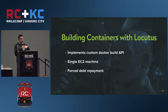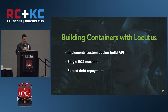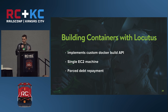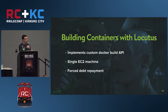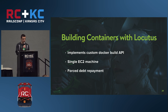Shopify has outgrown Dockerfiles, so we have our own internal build system called Locutus. It uses the Docker build API to build containers using Bash scripts. It initially ran on a single EC2 machine that wasn't dedicated to Locutus — one of those machines where you accumulate many non-critical apps until it becomes production-critical.